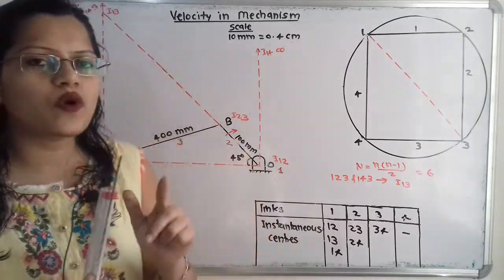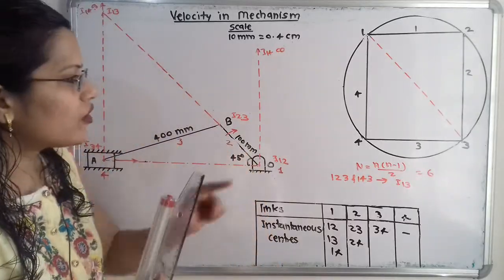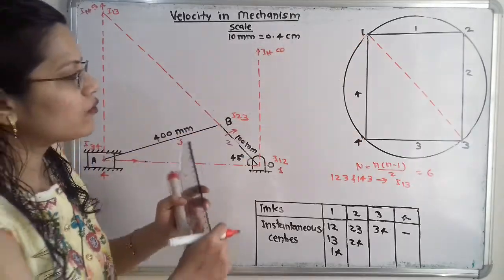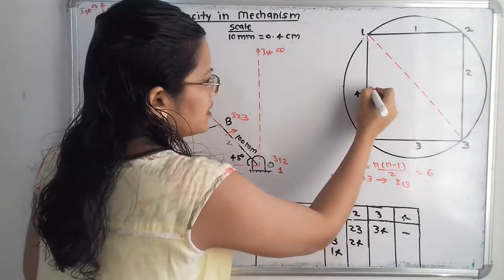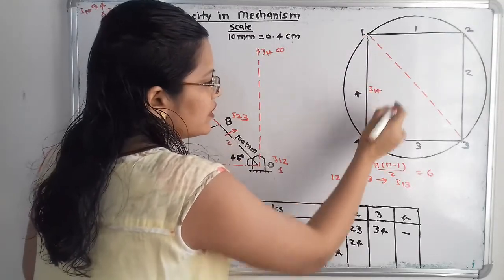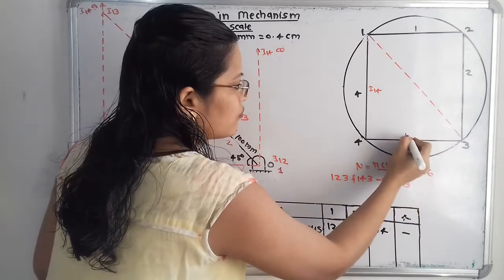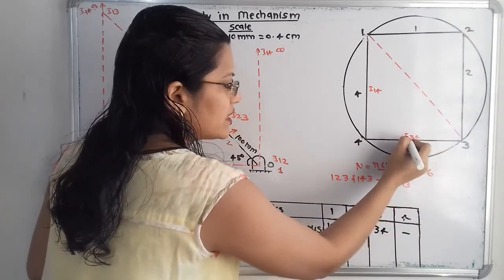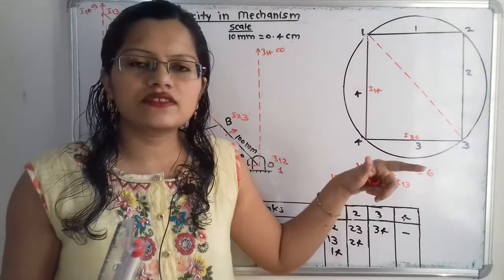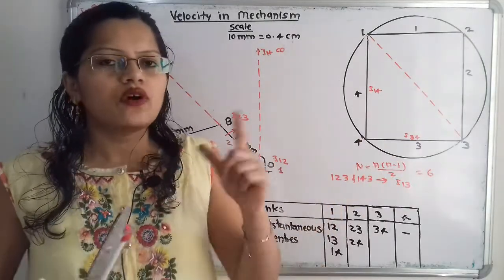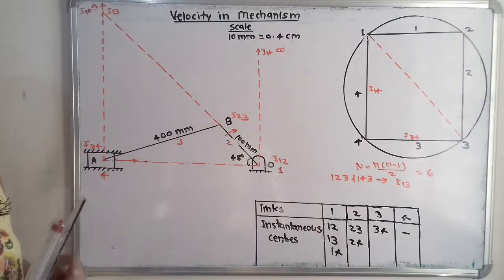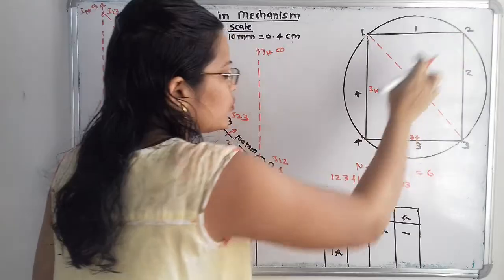An important rule: when naming an instantaneous center, always write the smaller link number first. So between links 1 and 4 it is I14, not I41, and between links 3 and 4 it is I34, not I43. Follow this rule every time to avoid confusion.